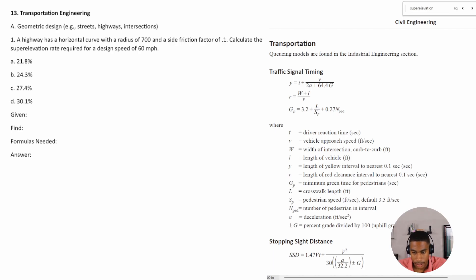All right, so how do we attack this problem? Well, we first have to decide what we're given. So it looks like we are given the radius, which is 700, the side friction factor, which is 0.1, and we're also given speed, which is 60 miles per hour.